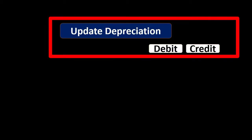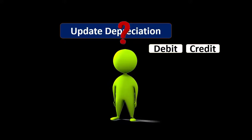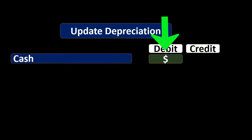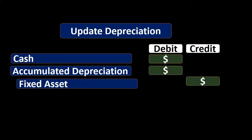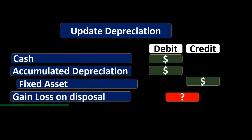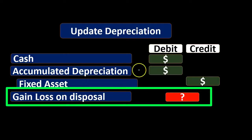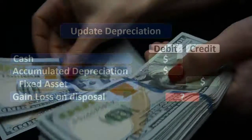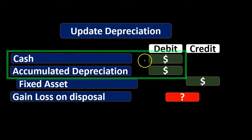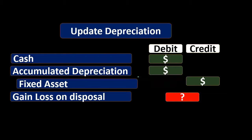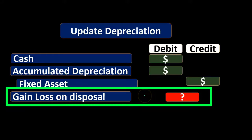Once the disposal is going to take place, we want to think first: is cash affected? If cash is affected, we would debit cash for the cash received. Then we take the equipment off the books as well as the accumulated depreciation, with the difference being a gain or loss on disposal. If we got more cash than the book value, we end up with a credit — a gain. If we got less cash than book value, we end up with a debit — a loss.